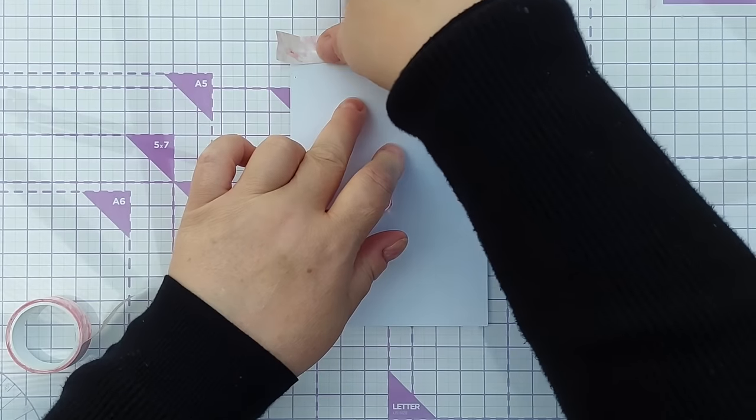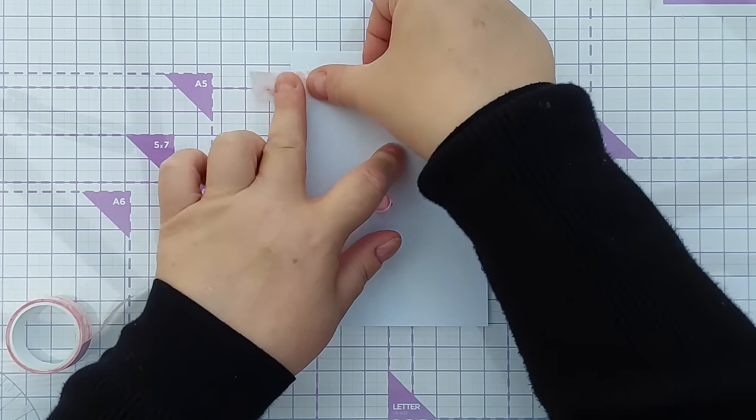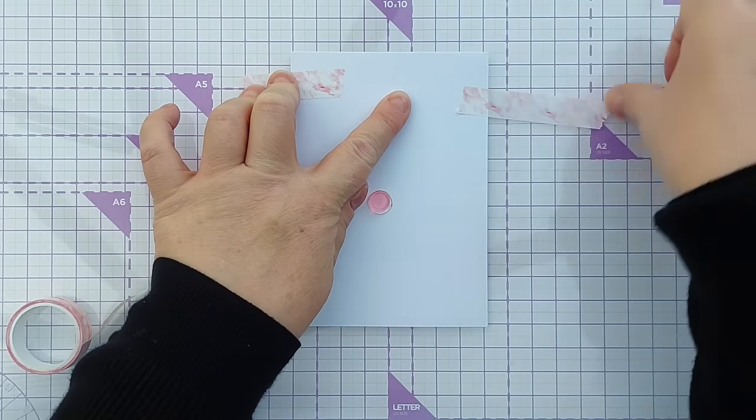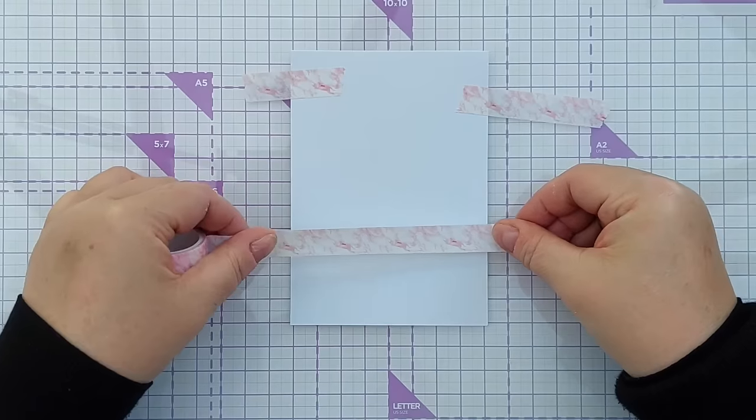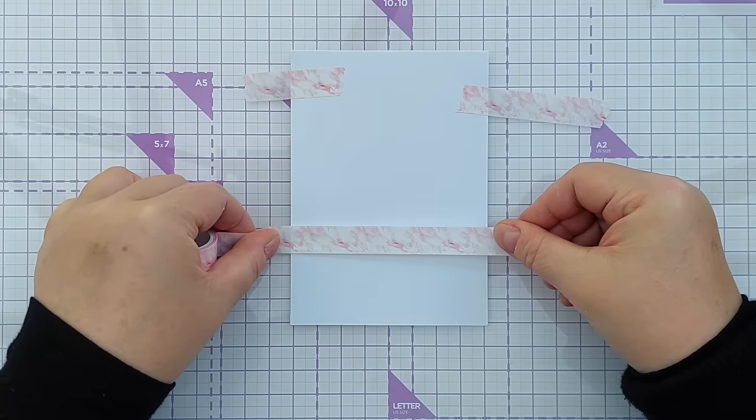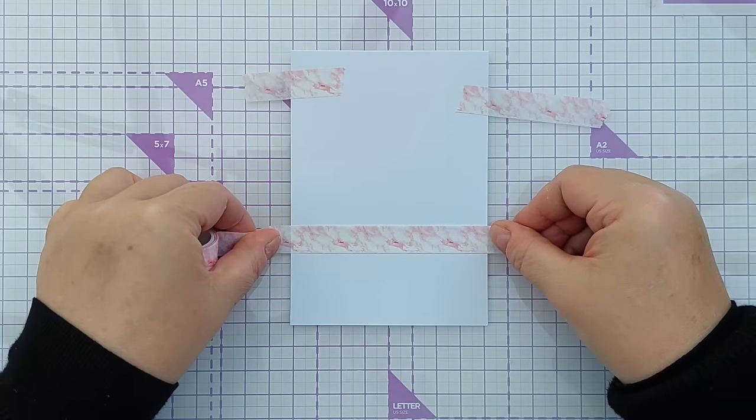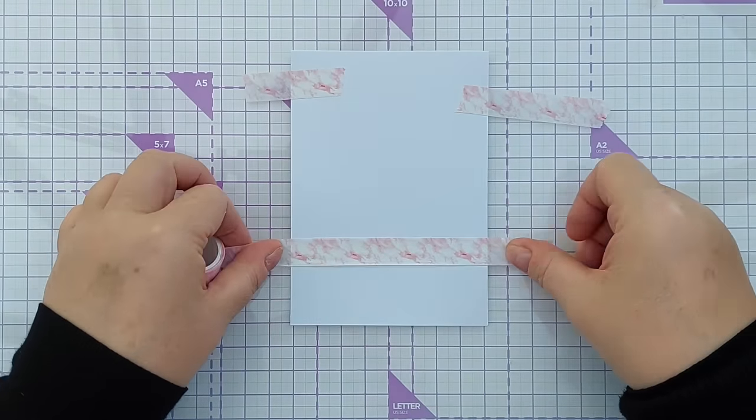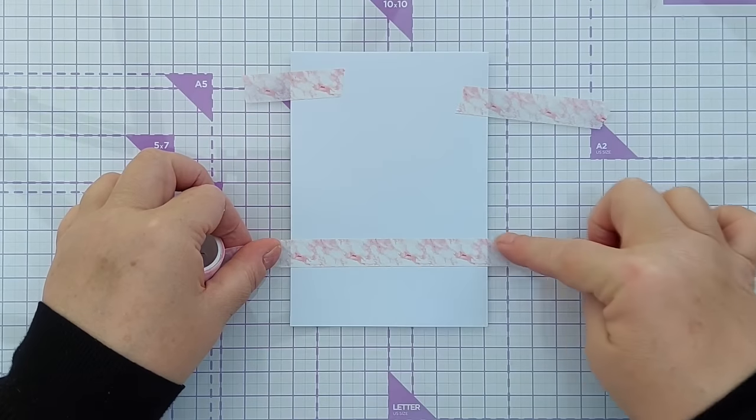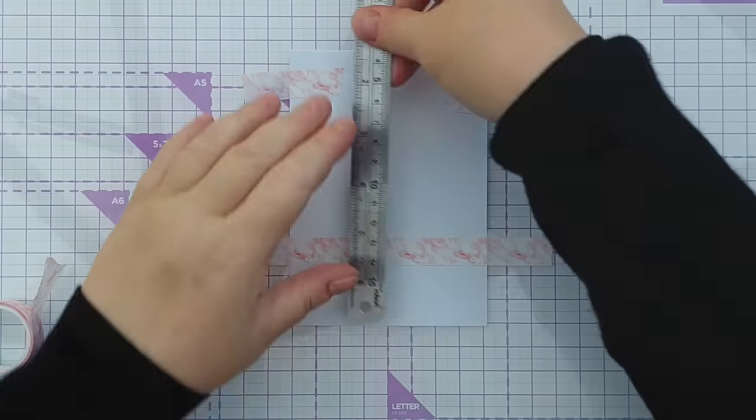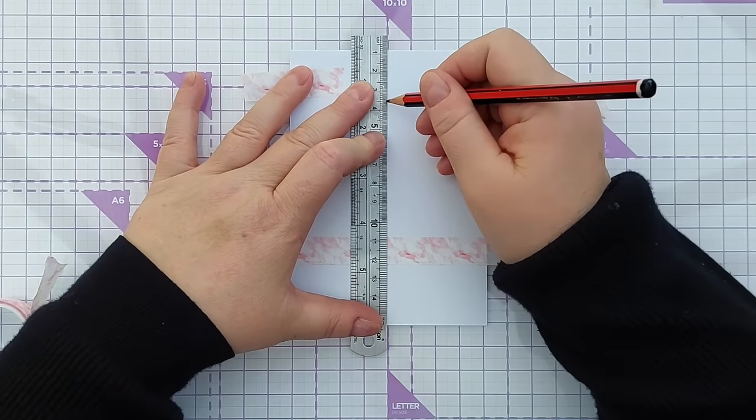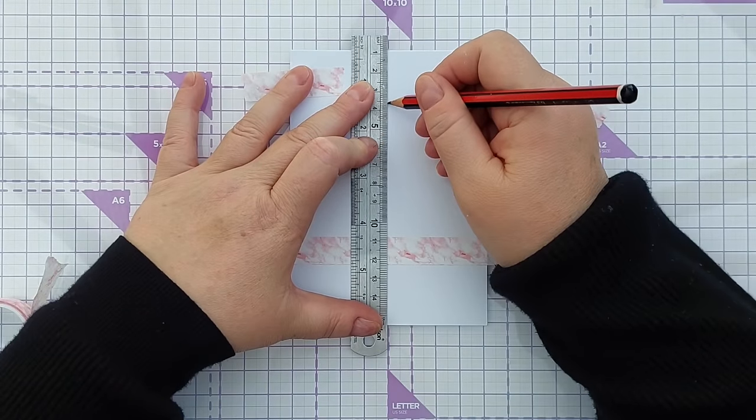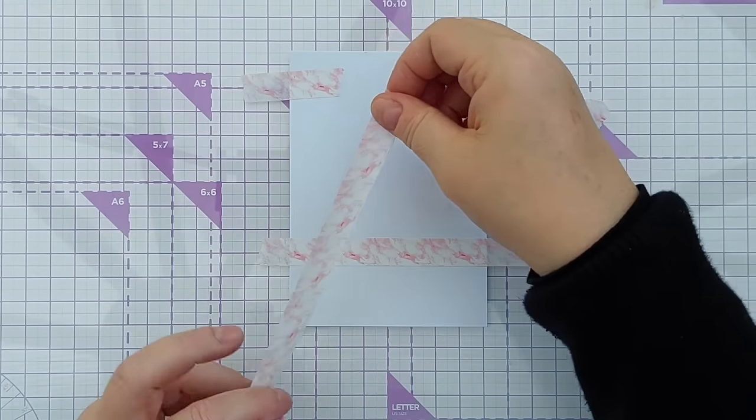Just use a bit of washi to hold it in place like that, and then I'm going to take some more washi and line it up so that it's horizontal. So that should be straight across there and I'm just going to use this roulette to make a little mark about there, so that's the center of my card.